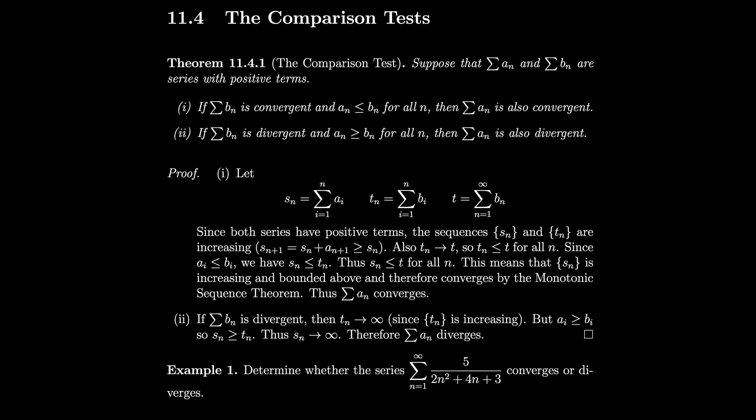Section 11.4, the comparison test. Suppose that the sum of a_n and b_n are series of positive terms. If the sum of b_n is convergent and a_n is less than or equal to b_n for all n, then the sum of a_n is also convergent. If the sum of b_n is divergent and a_n is greater than or equal to b_n for all n, then the sum of a_n is also divergent.